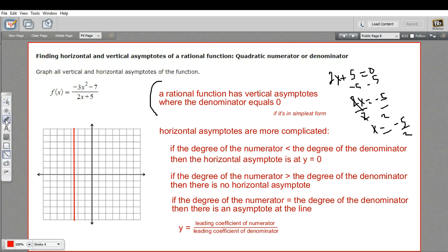Now the horizontal asymptotes follow this set of rules here. If the degree of the numerator is less than the degree of the denominator, you have an asymptote at y equals 0. That's not the case here. We have a greater degree. We have x squared here and only x in the denominator.